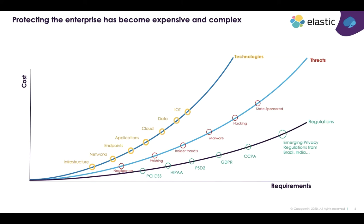The second dimension is threat evolution. Threats range from negligent problems — nonfeasance rather than misfeasance — all the way to state-sponsored threats we're seeing today. The sophistication of bad actors has grown substantially, and the range of people involved in threatening our systems has expanded significantly.